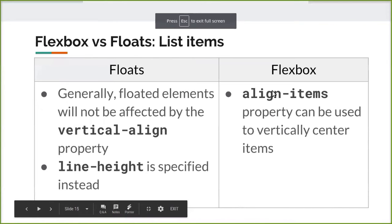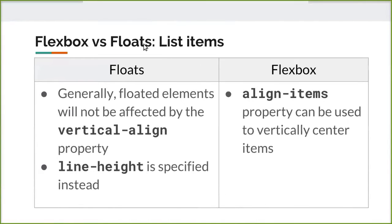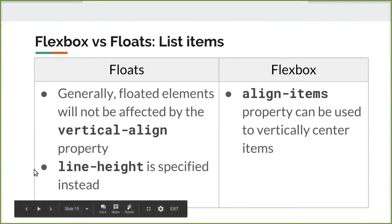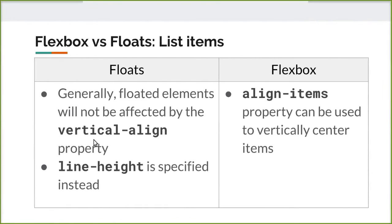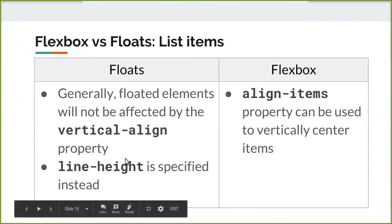That was the first example. Now moving on to using Flexbox versus floats in list items. I found that list items can be tricky, especially when trying to position items within them. With floats, you can't just use the vertical-align property because it generally doesn't affect floated elements — they vertically align however they like and you have no control. Instead you have to specify the line-height property, which is achievable but troublesome.